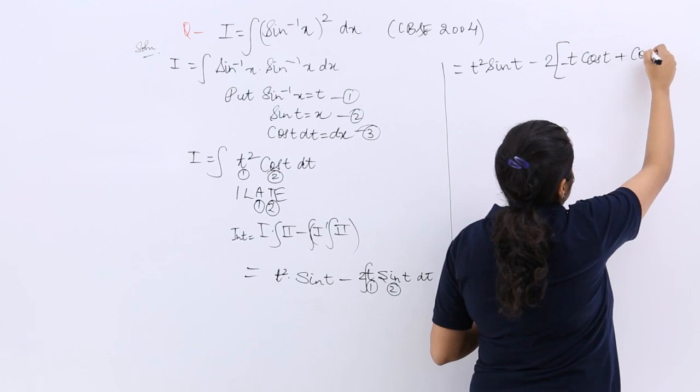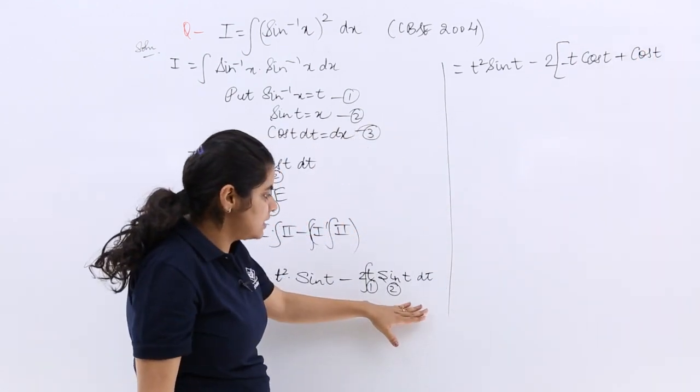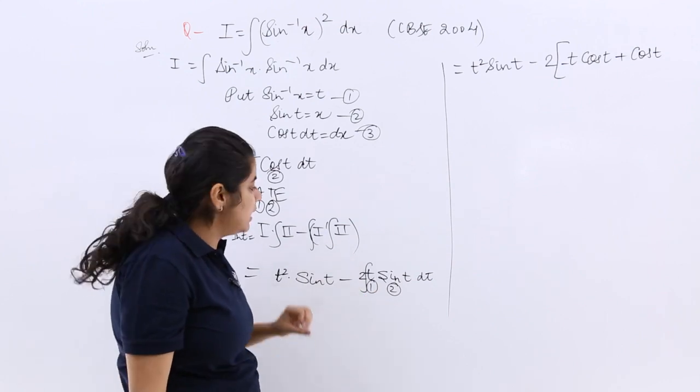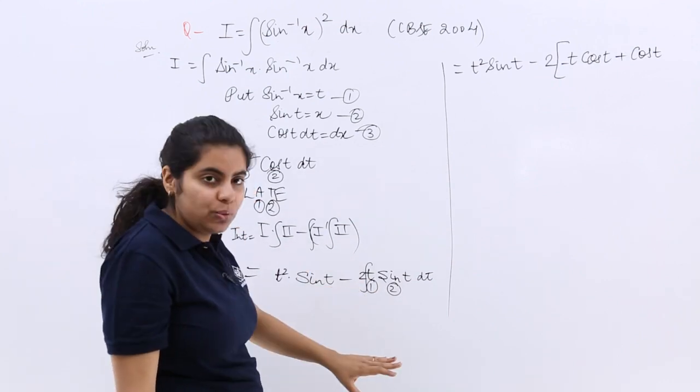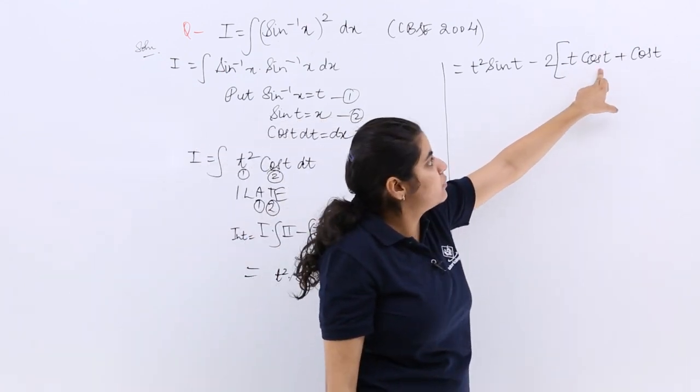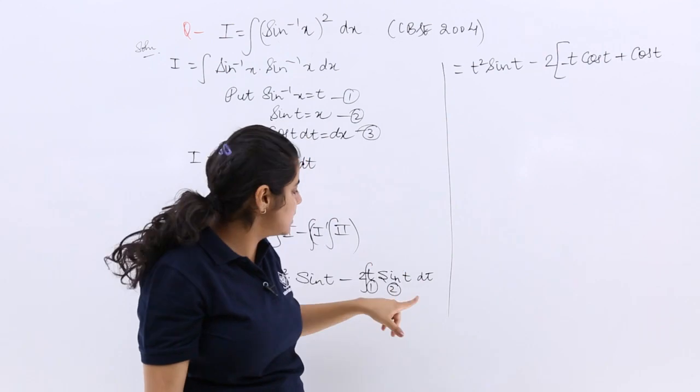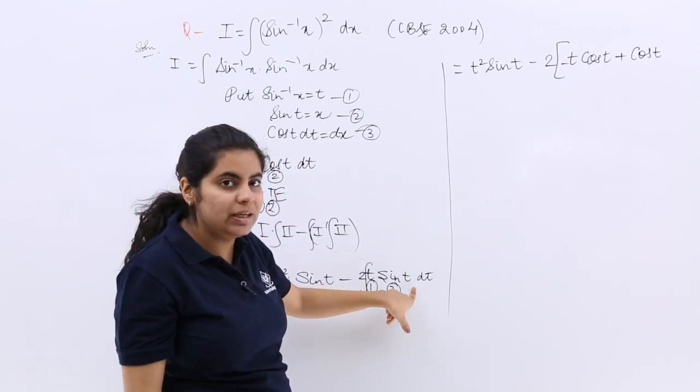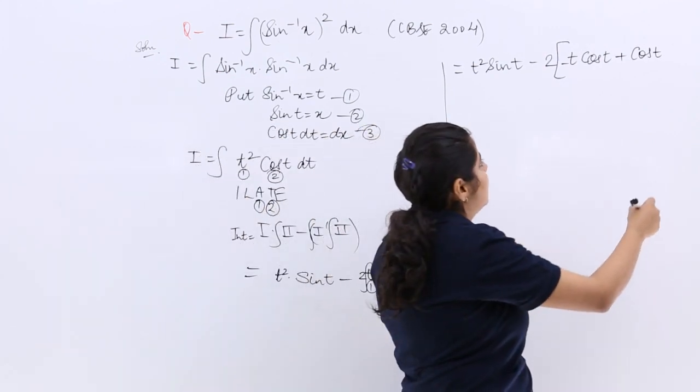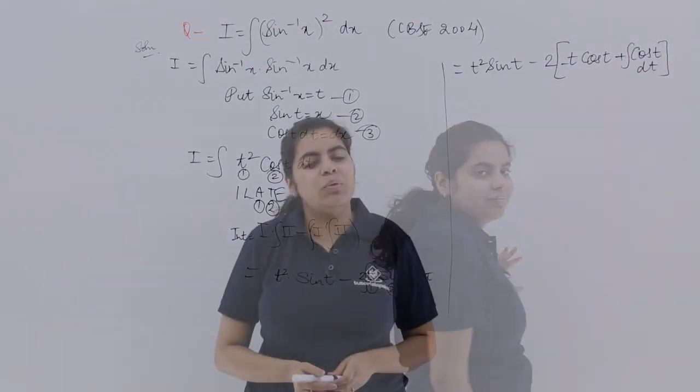So minus minus minus becoming plus, right? So again I repeat what I did. I had 2 already. Then first function into integration of second, minus sign. Differentiation of first into integration of second, then whole integration. So you have to do this integration again. Okay, so now the next step is I have t squared sin t copied as it is.